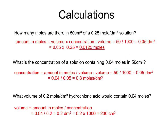Here's some more. How many moles are there in 50 cm³ of a 0.25 mol/dm³ solution? Convert 50 cm³ to dm³ by dividing by 1000 = 0.05 dm³. Then moles = volume × concentration = 0.05 × 0.25 = 0.0125 moles.